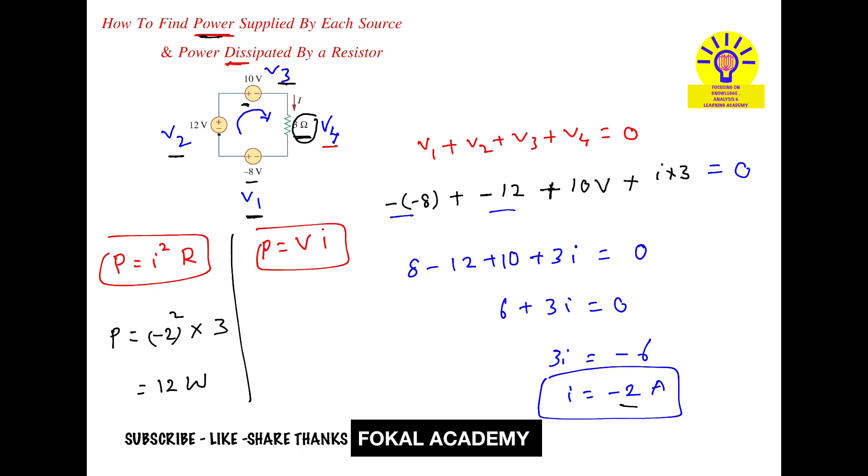Now find power supplied by each source. Let P1, P2, and P3 be the powers. Use the formula P equals VI. P1 equals minus 8 times minus 2, which equals 16 Watts. Power P2 equals minus 2 times 12, which equals minus 24 Watts. Power P3 equals minus 2 times 10, which equals minus 20 Watts.